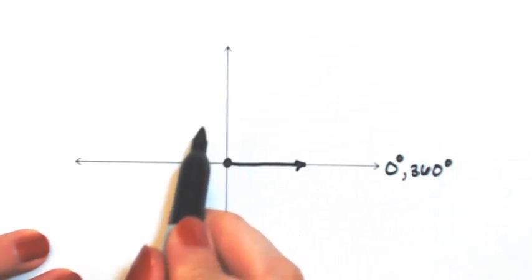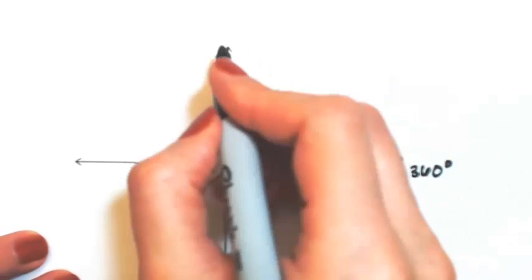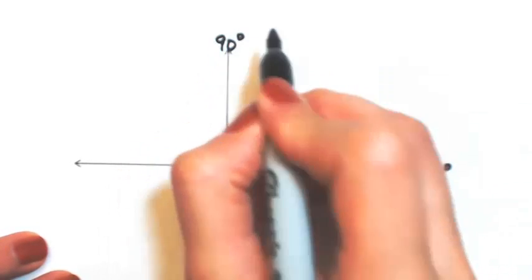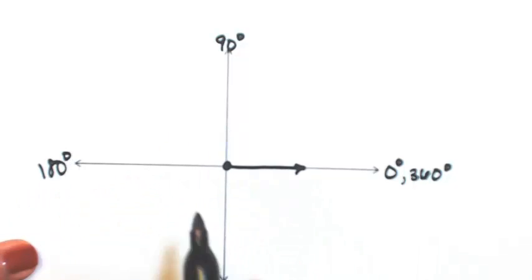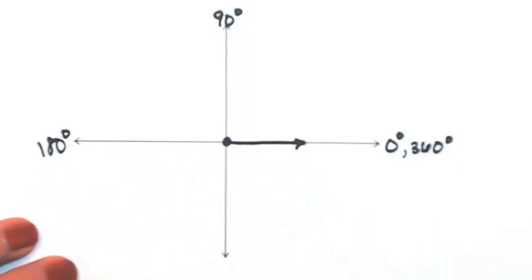So then every quarter would be another 90 degrees. So 180, add another 90, we get 270.